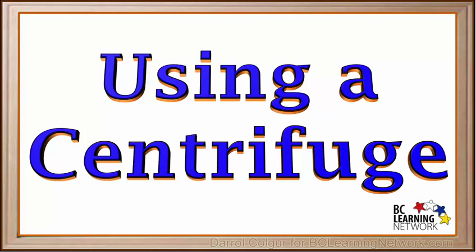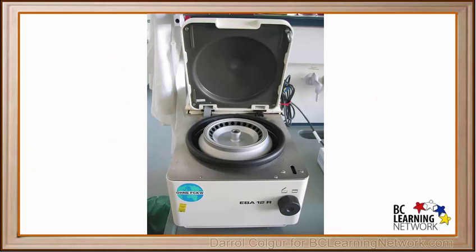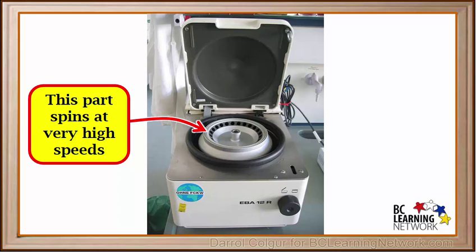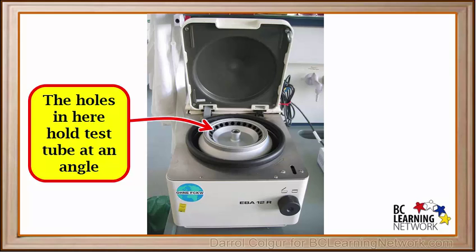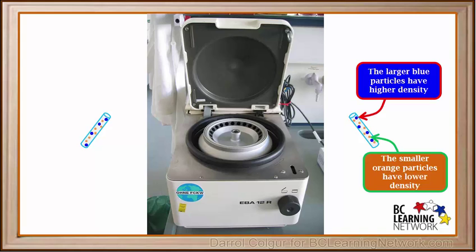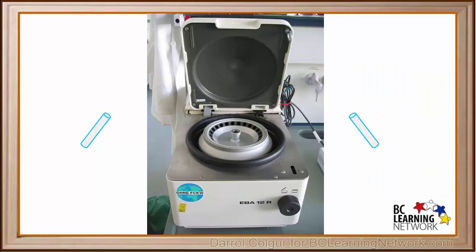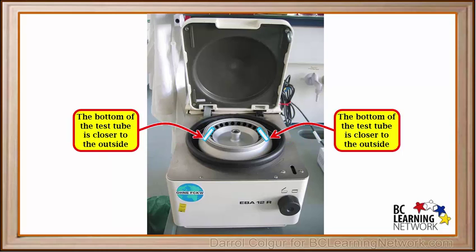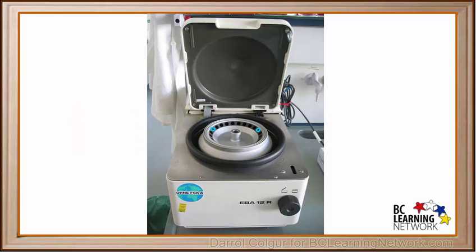We can also use a device called a centrifuge to separate mixtures using density. Here is a picture of a centrifuge. This central part spins at very high speeds when the switch is turned on. The holes in this part hold test tubes at an angle, so the bottom of the test tube is closer to the outside. If we put two test tubes into this device containing a mixture of two types of particles — larger blue particles with higher density and smaller orange particles with lower density — they fit at an angle with the bottoms closer to the outside.